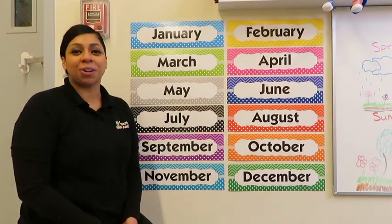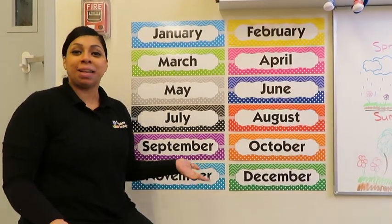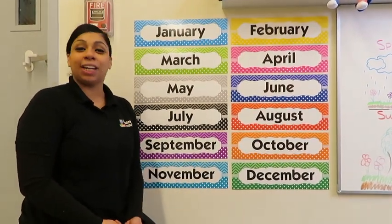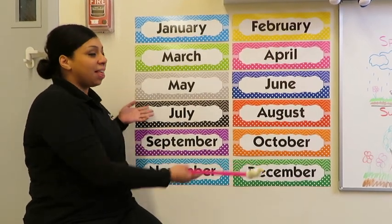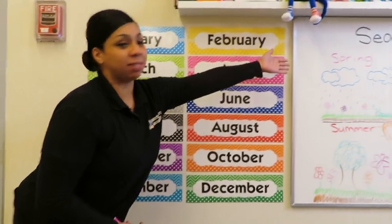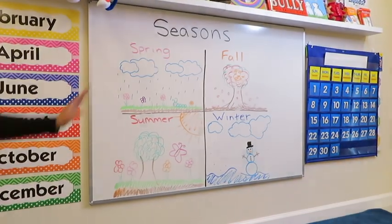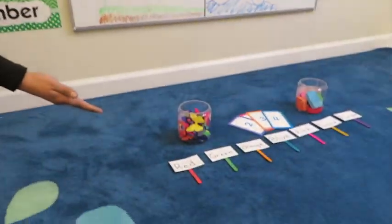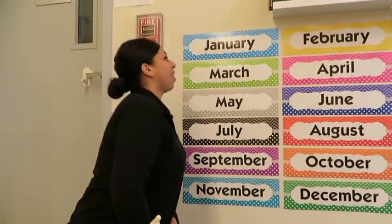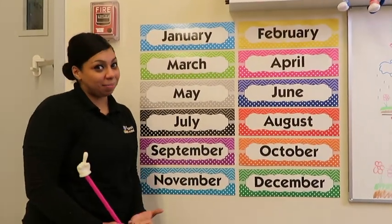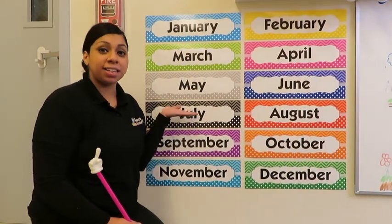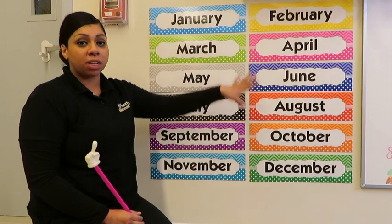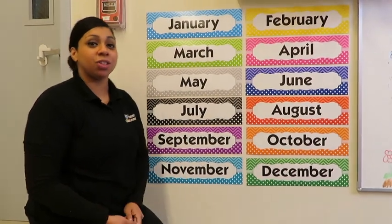Good morning, friends. Welcome to Circle Time with Miss Erica. We're going to go over the months of the year, then we're going to do some seasons, and some color sorting and counting. So I hope you're ready. I really miss singing with you guys, so I want to sing the song we always sing in class. But let's review the months first, and then we'll get into the song.